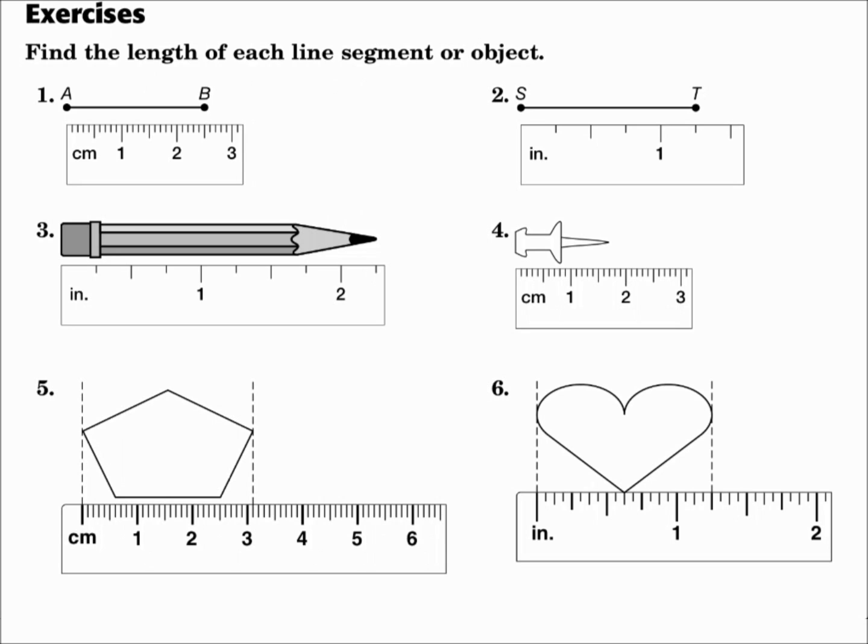Find the length of each line segment or object. Number 1. Segment AB is measured with centimeters. Line it up. And that hits 2.5 centimeters.